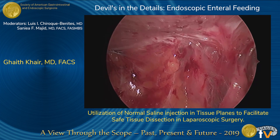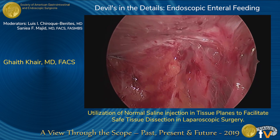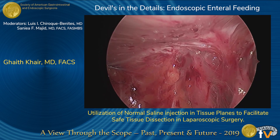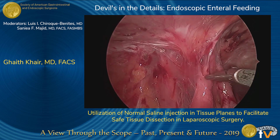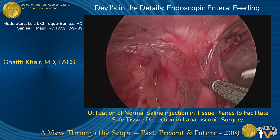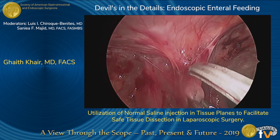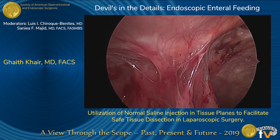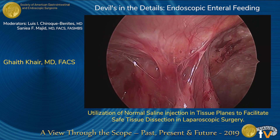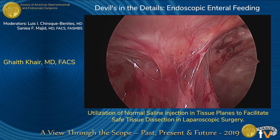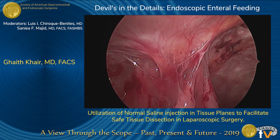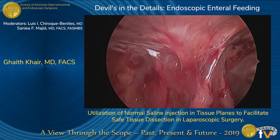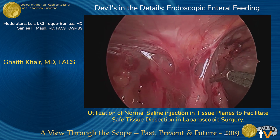We identify four different kinds of adhesions. One set of adhesions where this technique is not needed is where either the omentum is attached to the anterior abdominal wall, or the adhesions are flimsy and are easily divided with scissors.